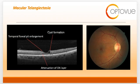Fundoscopically, MAC-TEL is characterized by telangiectatic vessels in the juxtafoveolar region, most commonly temporal to the fovea of both eyes. This condition may pose a diagnostic challenge when evaluated fundoscopically due to the subtle foveal findings.